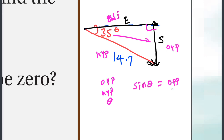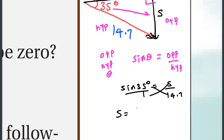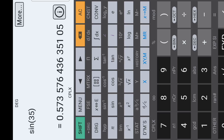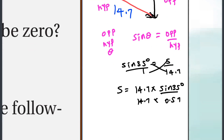Sine theta equals opposite over hypotenuse. Sine of 35 degrees equals the east component over 14.7 km. Sine 35° = 0.57. Therefore the east component equals 0.57 times 14.7, which gives approximately 8.43 kilometers.